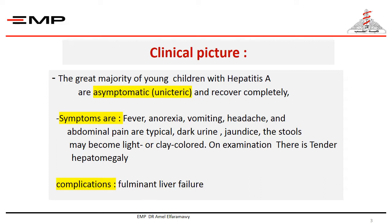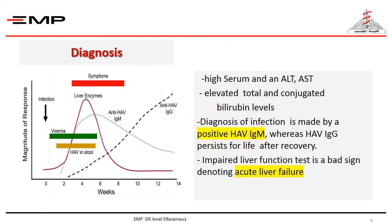Some may develop fulminant hepatitis leading to death or requiring liver transplantation. There will be marked elevation in ALT and AST, as well as elevated total and conjugated bilirubin levels.